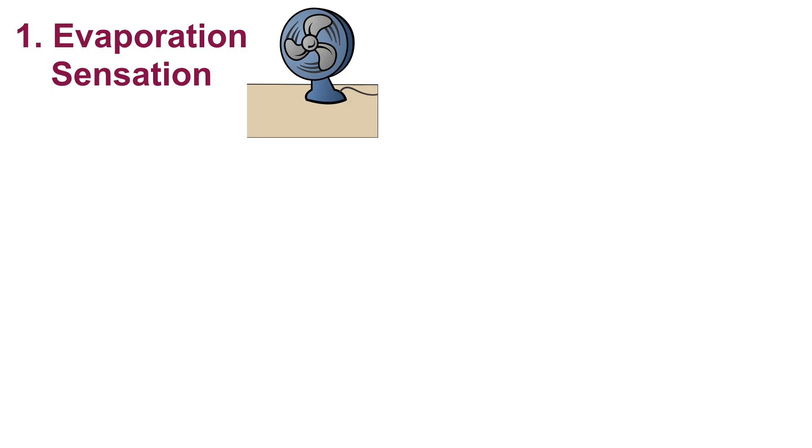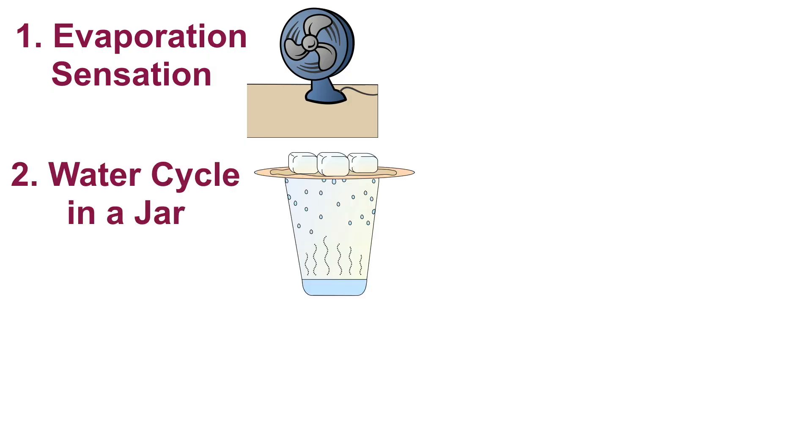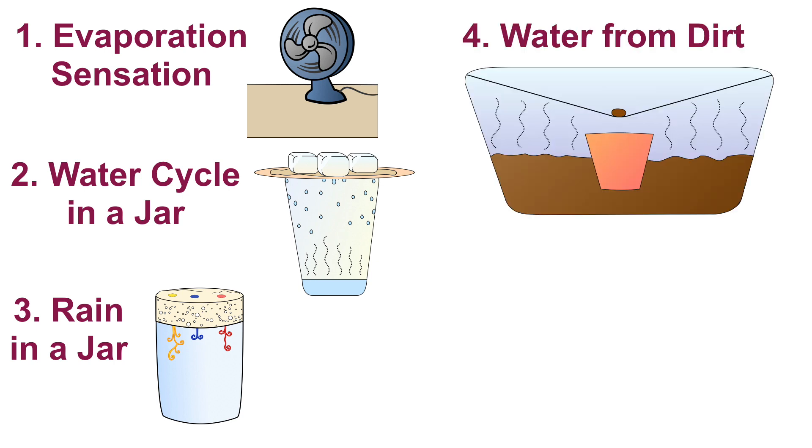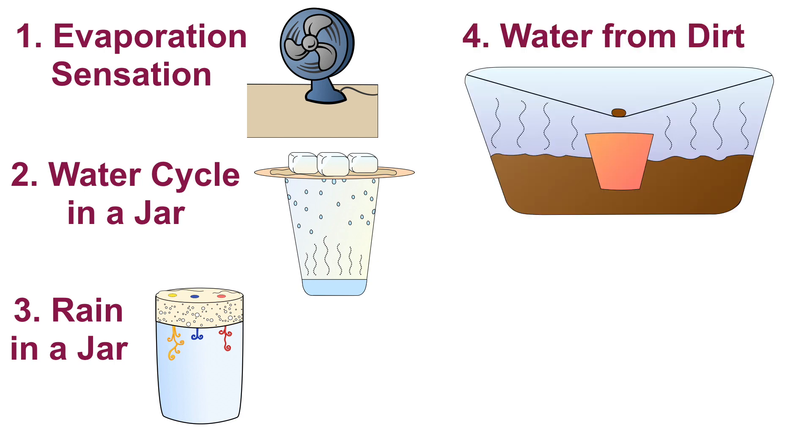Welcome to Science Mom's Guide to Water, Part 7. In our previous six videos, we covered water's properties of cohesion, adhesion, capillary action, surface tension, and being a universal solvent. In this video, we're going to explore how water changes state with five hands-on activities: evaporation sensation, water cycle in a jar, rain in a jar, pulling water from dirt, and balloons that don't pop.